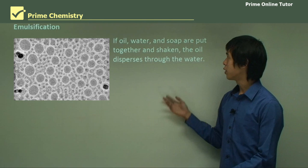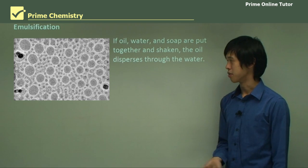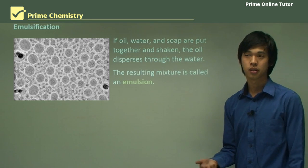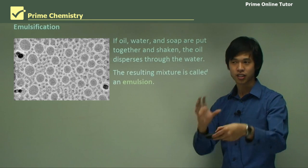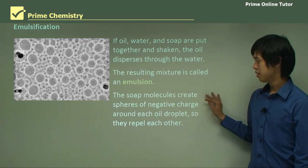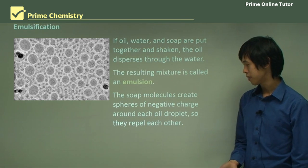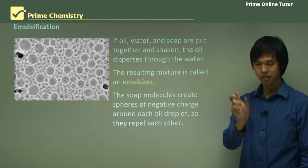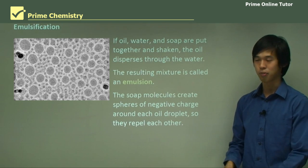If oil, water, and soap are put together and shaken, the oil disperses through the water. The resulting mixture is called an emulsion, because they're not dissolved in one another, they just happen to be mixed together. The soap molecules create spheres of negative charge around each oil droplet, so they repel each other.